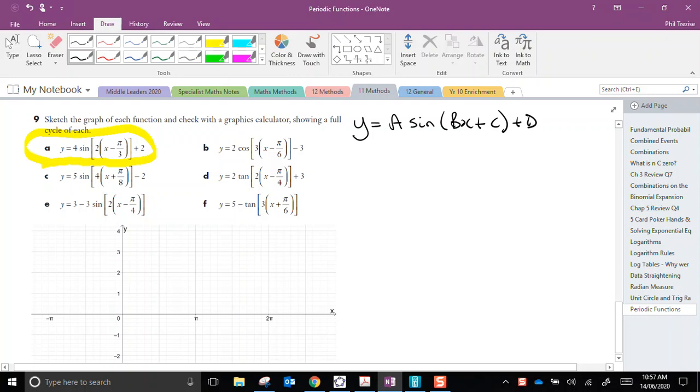Now, the equation I've been given. We've been given y equals 4 sine. Now they've done something funny here, haven't they? They've factored 2 and then they have x minus pi over 3, and then they've added 2.